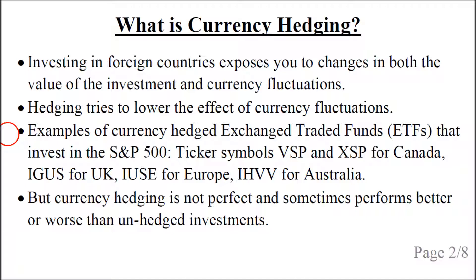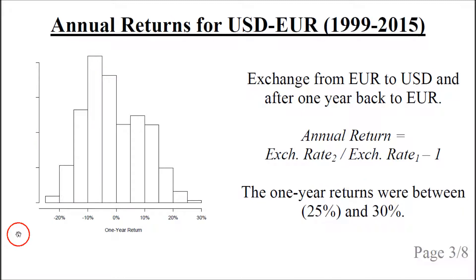include VSP and XSP for Canada, and IGUS for Europe and IHVV for Australia, among others. However, currency hedging is not perfect, and it sometimes performs worse or better than unhedged investments.